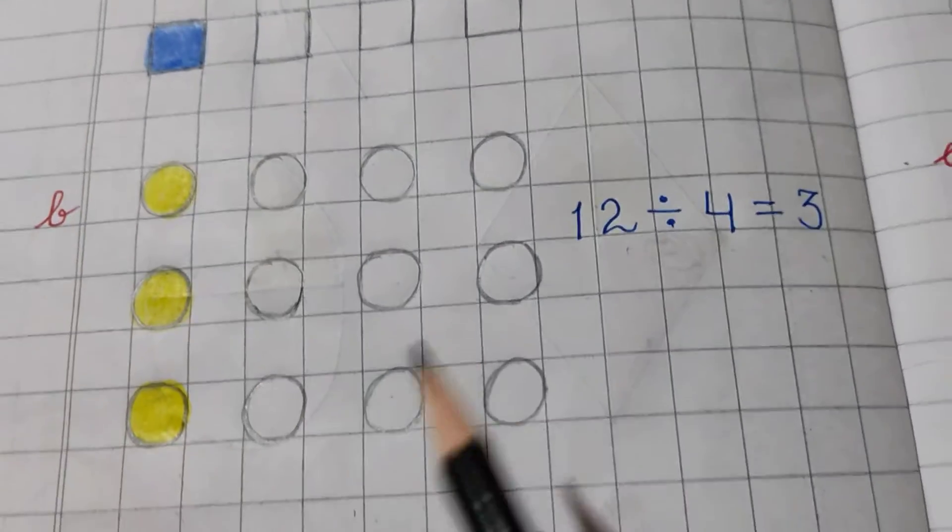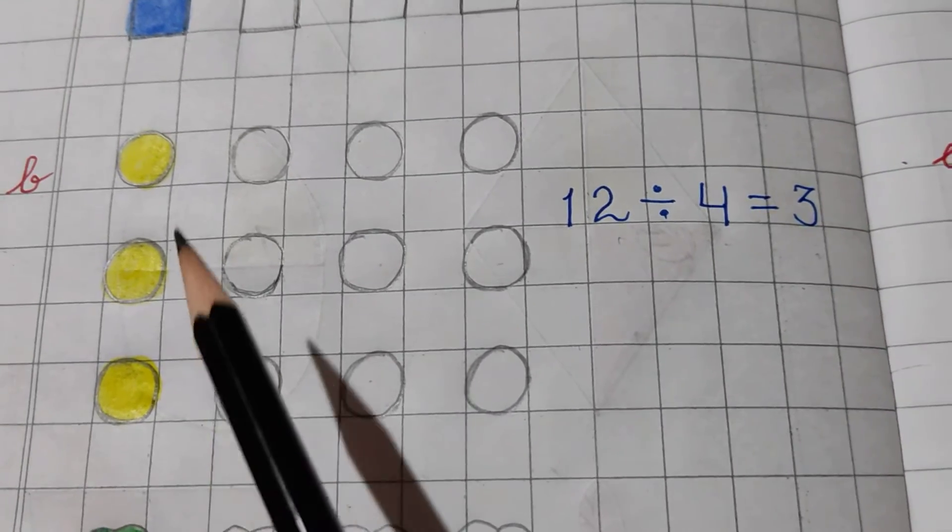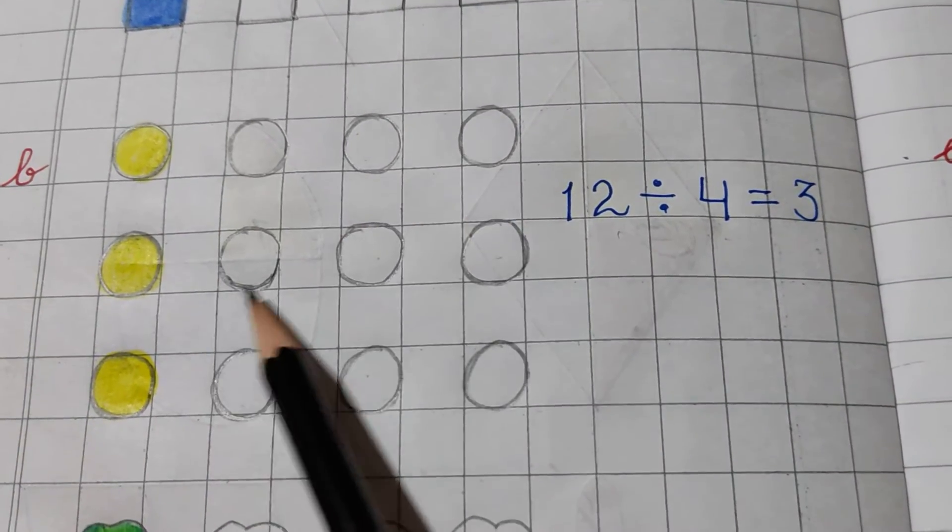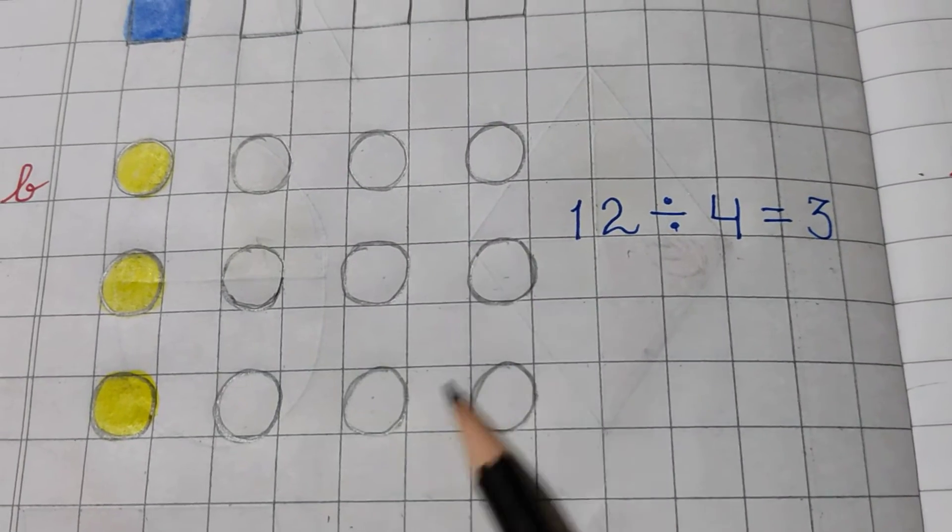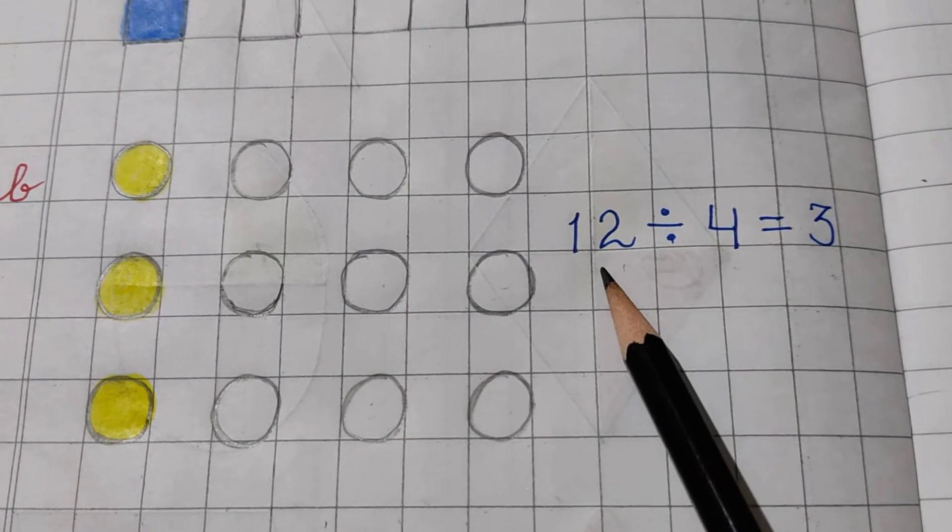In B part, I have drawn some circles. Let's count 1, 2, 3, 4, 5, 6, 7, 8, 9, 10, 11, 12. These are 12 circles. So, I have written 12 here.